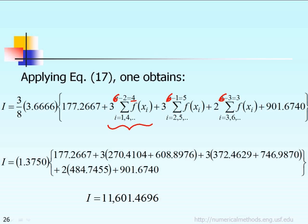The next summation term, i goes from 2, 5, 8, and so on until the last term, which is n minus 1 — n minus 1 equal to 5 in this case.